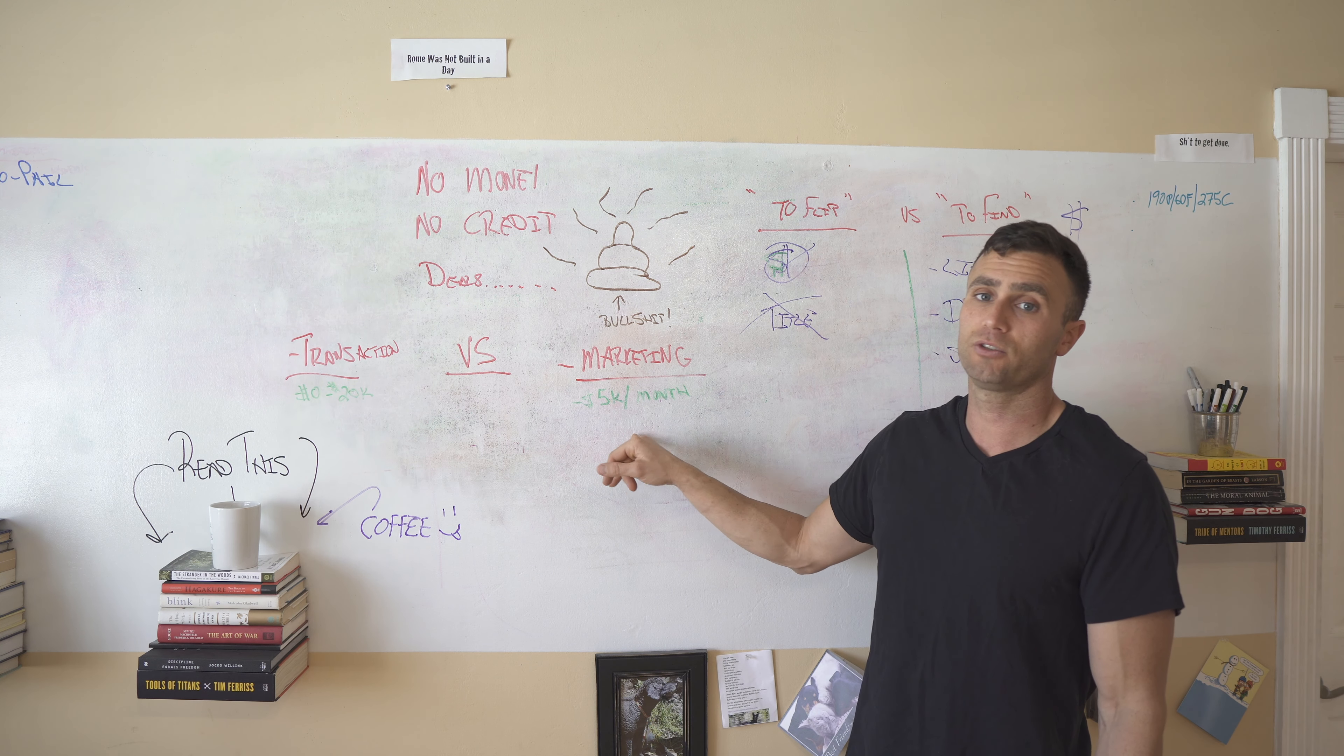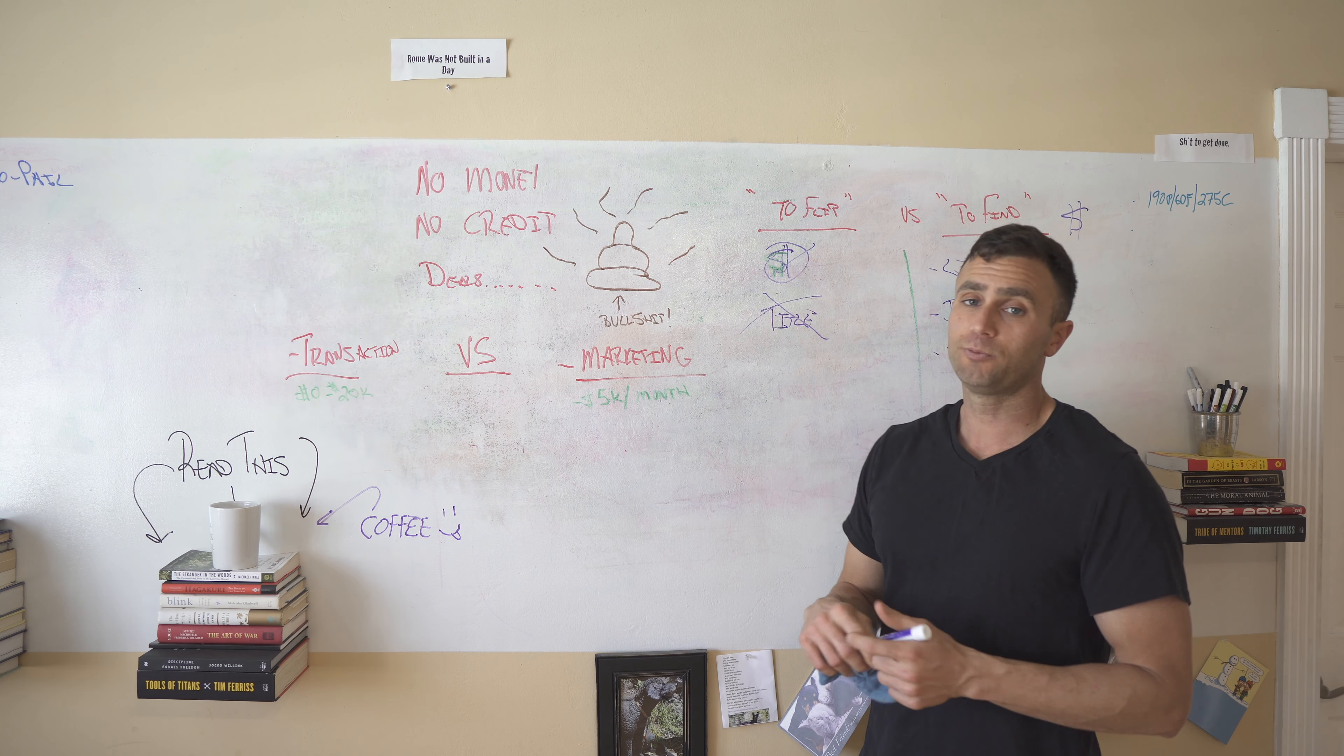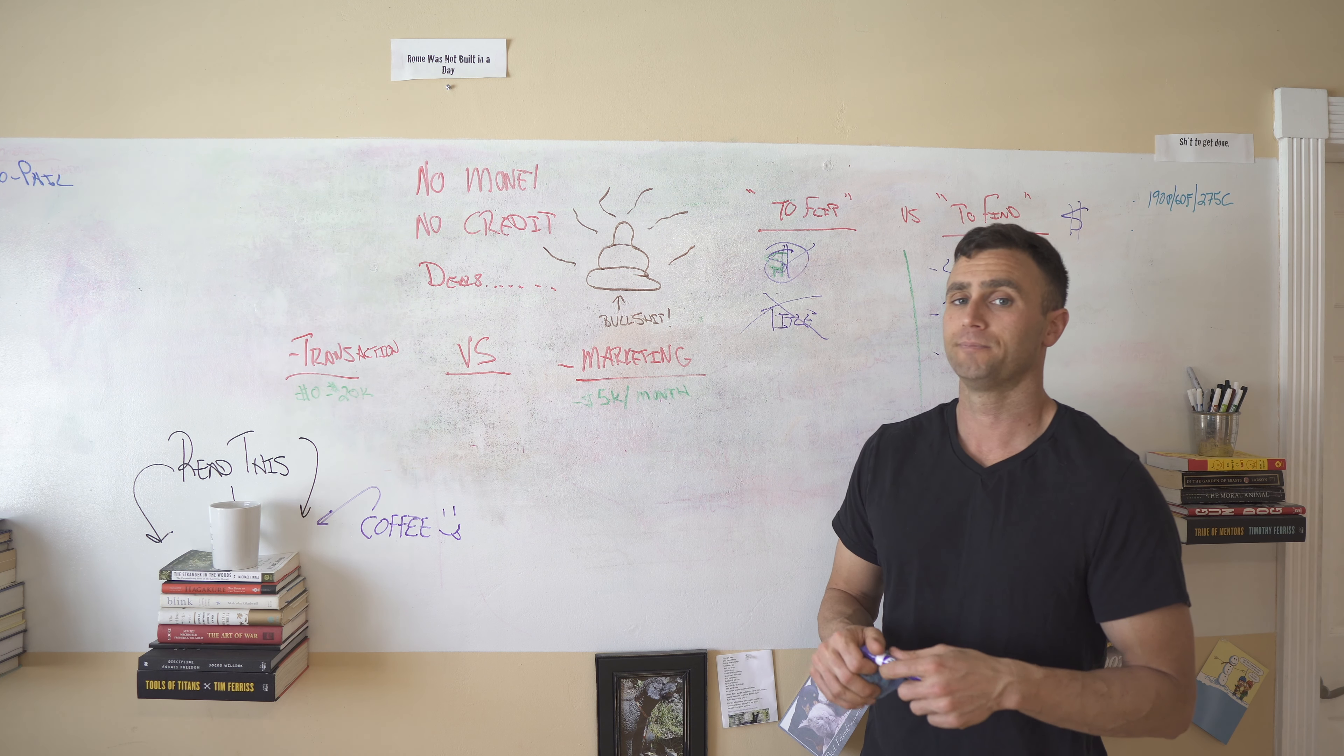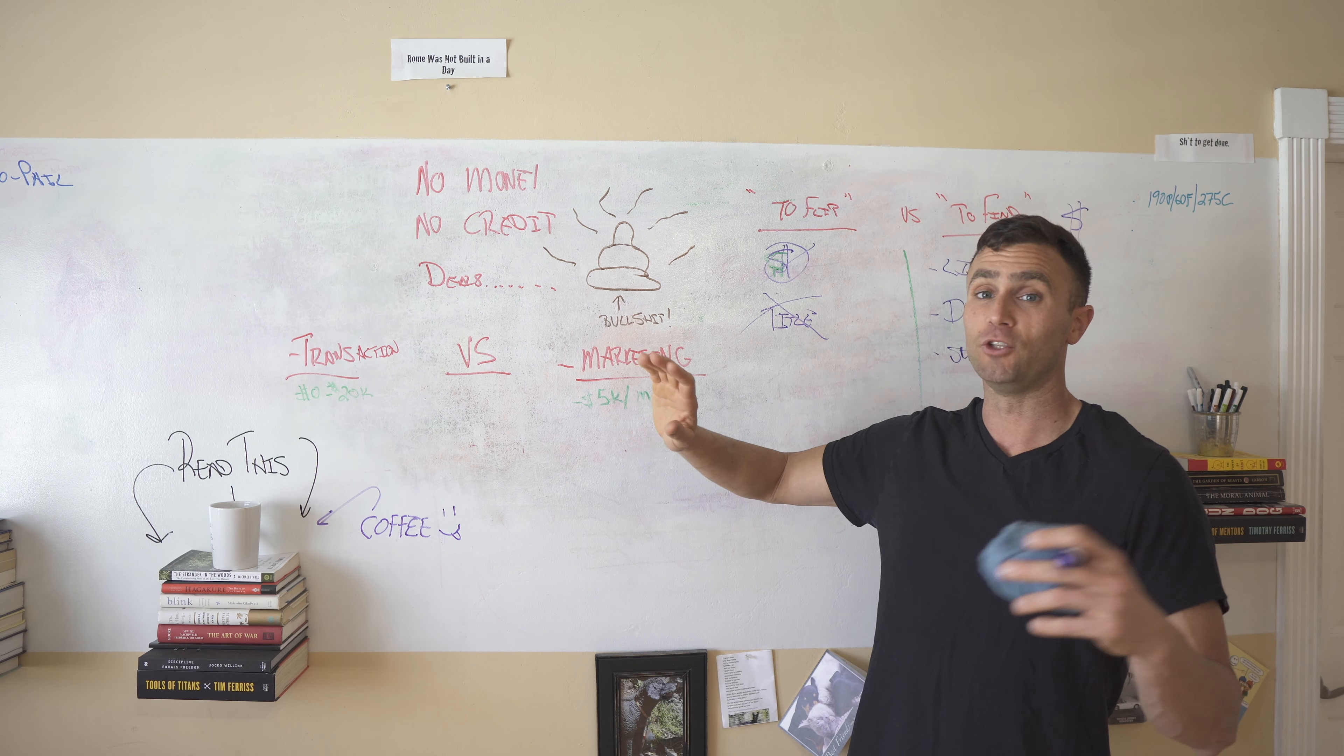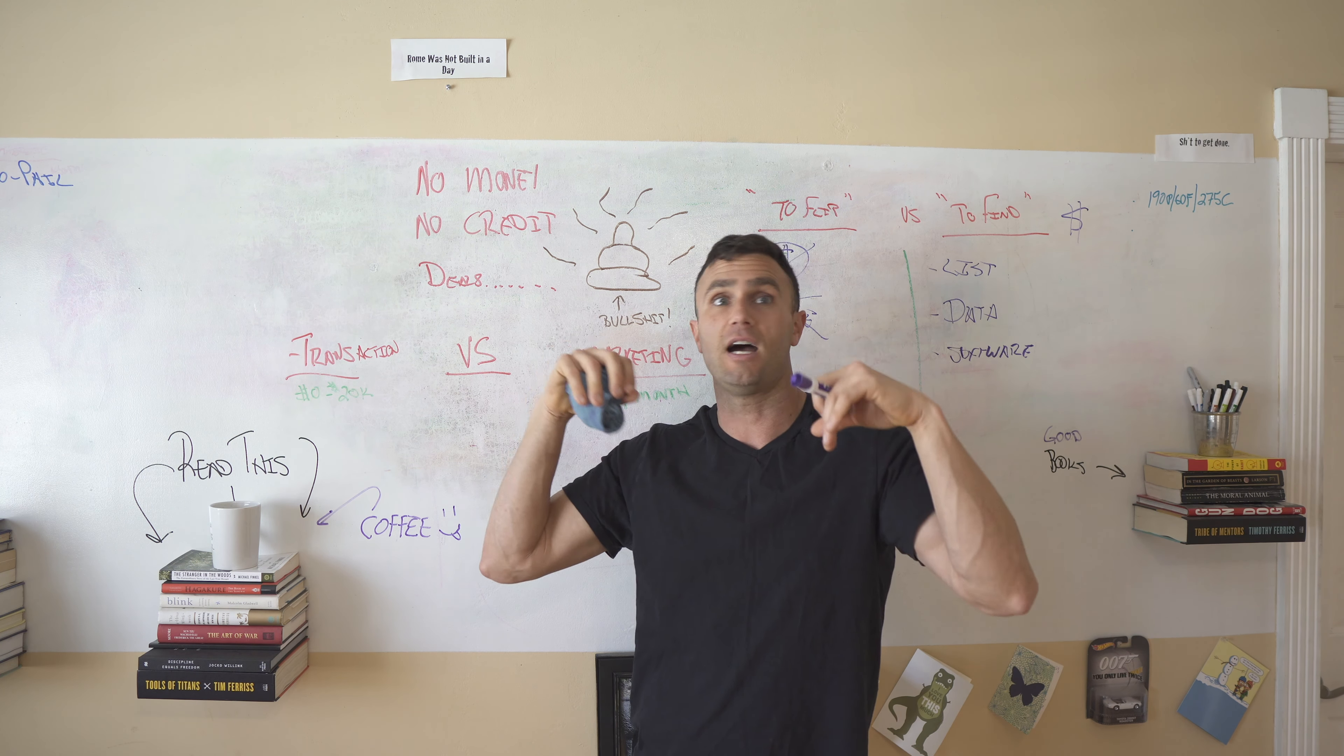The point being is that technically she flipped the home with no money and it didn't go on her credit report. However, she had to spend the money on the marketing to get the list, get the data, the software. She had to buy the bandit sign, she had to do all of this stuff in order to get the deal, in order to flip with no money and no credit. So this is important that you understand the difference between these concepts. If you're brand new to this game, maybe you found this video stumbling around one night, you're looking to make a move in real estate or whatever else, don't go out and spend a bunch of money on one of these courses.